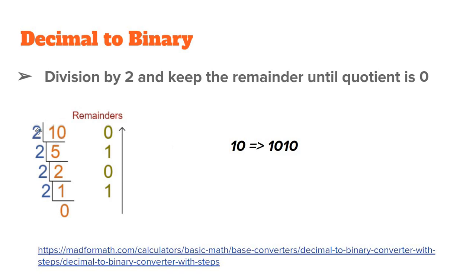So, for example, if we try to convert number 10, we divide it by 2. We get remainder 0, quotient 5. Again, we divide 5 by 2. The result is 2, but the remainder is 1.